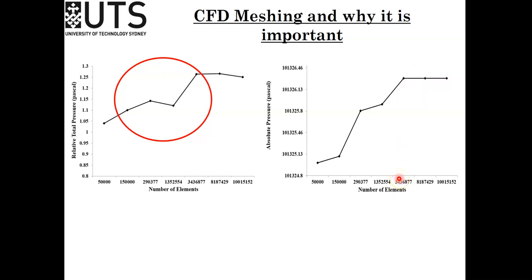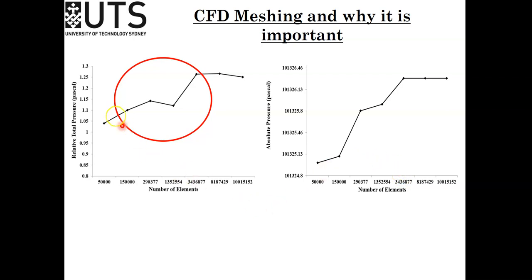I found during class that some of you have done the simulation first and then are doing the grid refinement test — this is the wrong approach. You need to do the grid refinement test first. When you see that your solution is stable, then use that mesh. Otherwise, as I told you, you will get very poor marks.